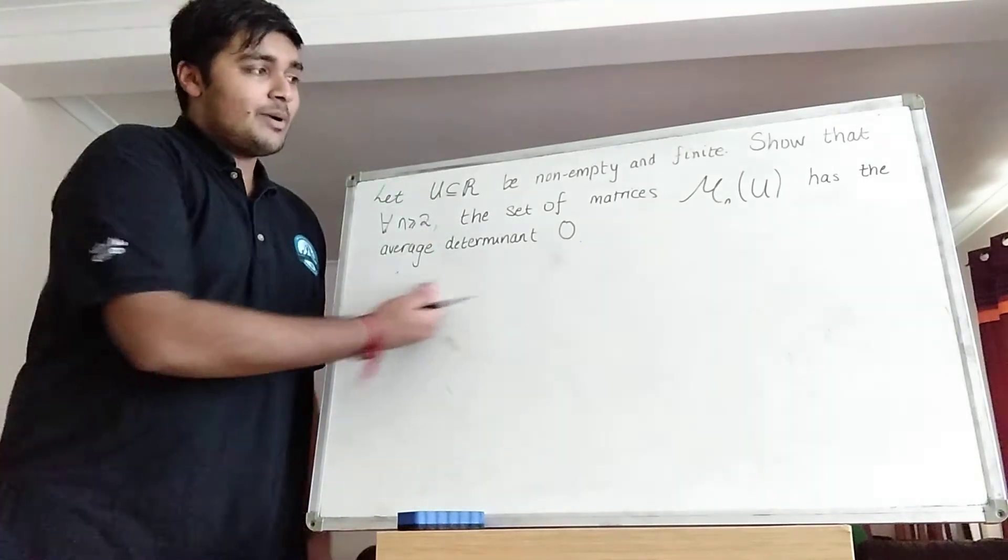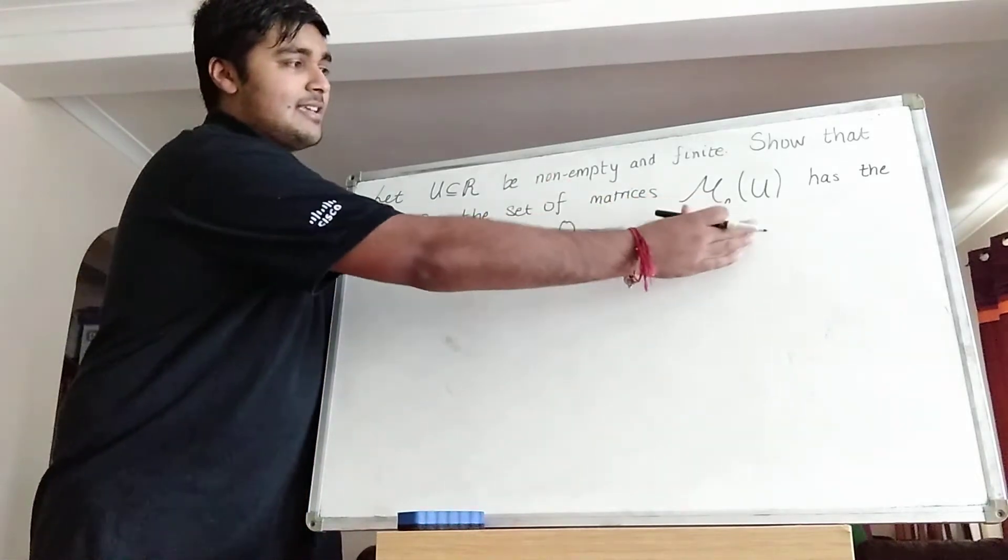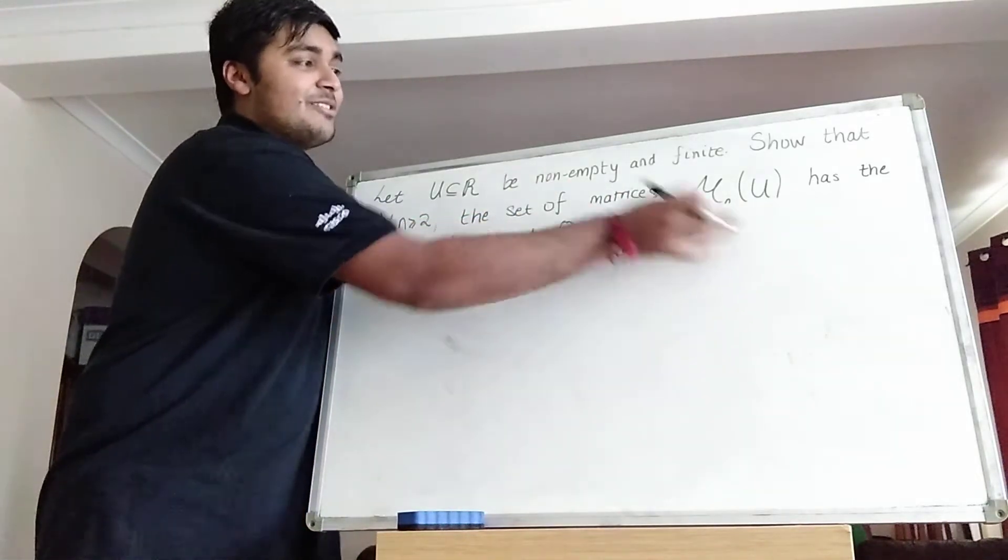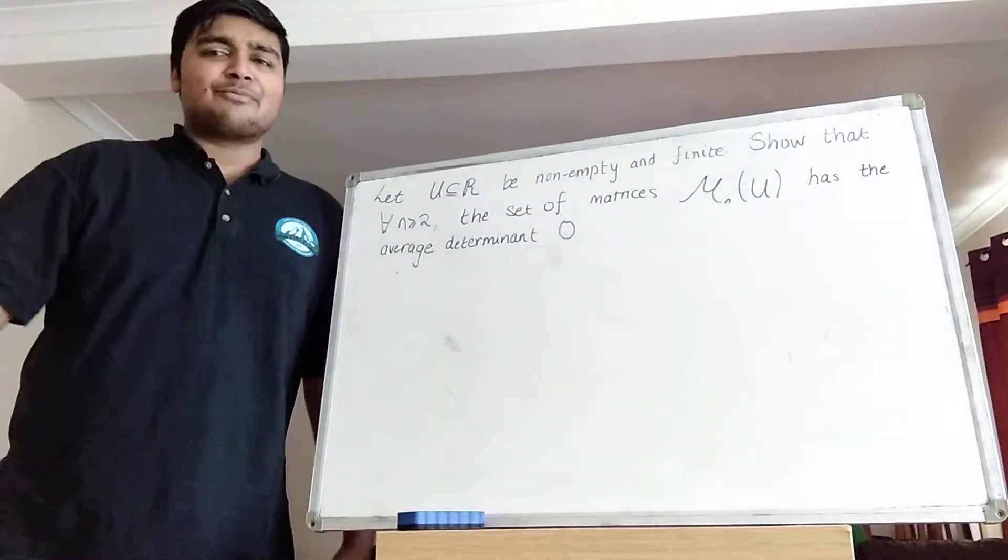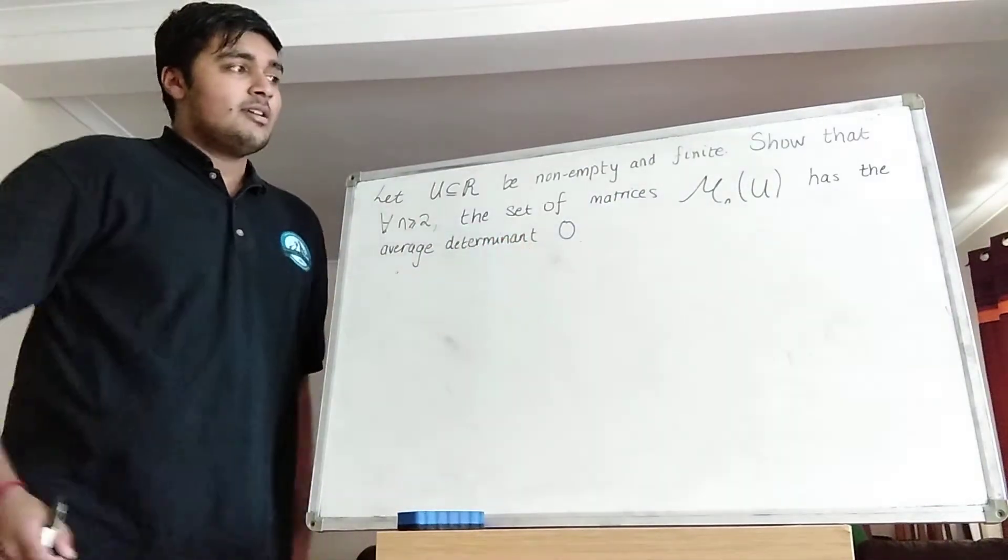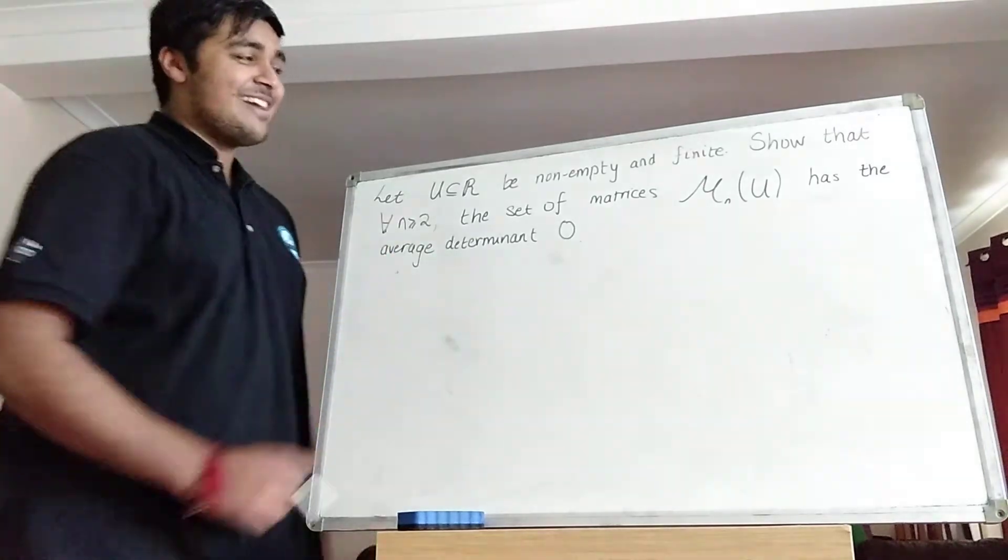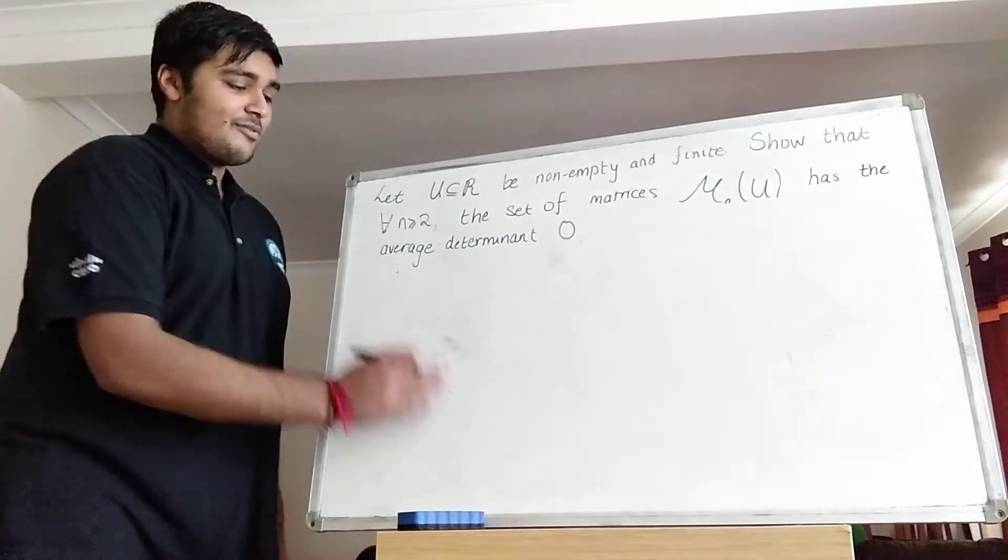So this set here is simply the set of n by n matrices where each element is some number in u. And by average determinant, we simply mean whenever we take the determinant of each of the matrices in here and look at the average, we're going to get 0. Okay, so if you want to have a go at this problem, pause the video now and give it a go. And I'm going to go over a solution.